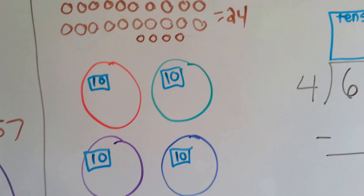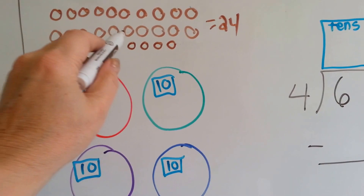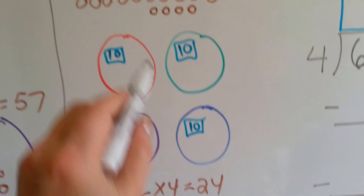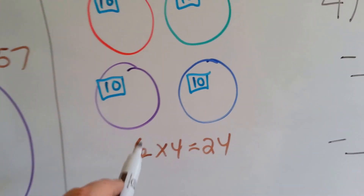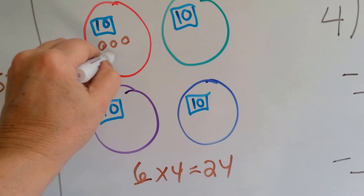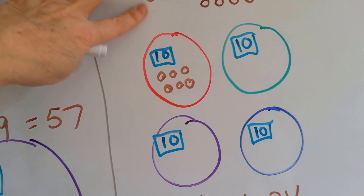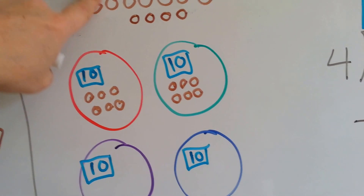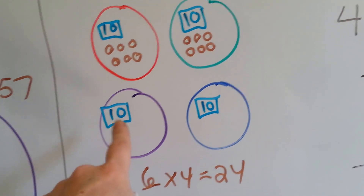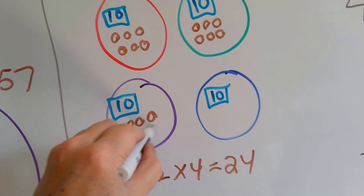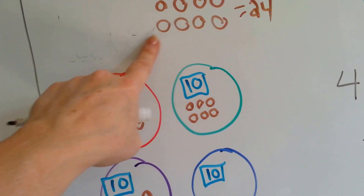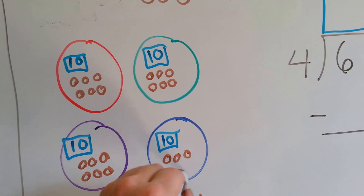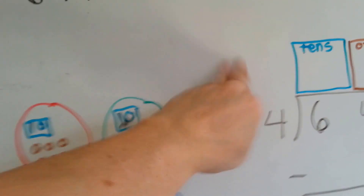Do you know how to split 24 equally between 4? What times 4 equals 24? Each one is going to get 6 cookies. So the first person gets 6, the second gets 6 — two, four, six — the third gets 6 — one, two, three, four, five, six — and the last person also gets 6. Now those are all gone and they're split evenly.